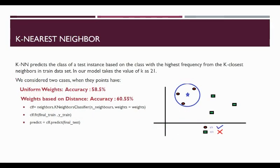So, next up is the K-nearest neighbor model. In this, the data units are classified based on the class with the highest frequency amongst the K-closest neighbors in the train dataset. For our model, a higher accuracy is received when k-value is taken as 21 using the Euclidean distance method. When the data points have uniform weights, the accuracy was 58.5%. On weighing points based on distance, we get an accuracy of 60.55%.